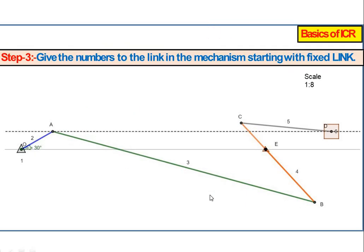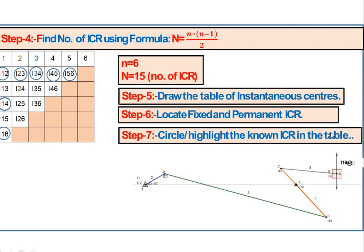After plotting the space diagram, label link numbers 1 through 6. Since the number of links is 6, using the ICR formula n(n−1)/2, there will be 15 ICRs in total.